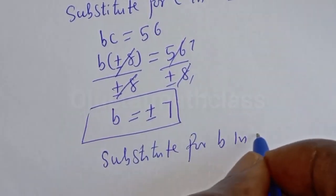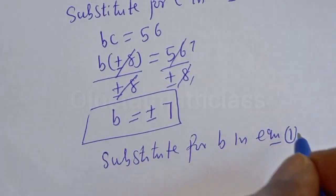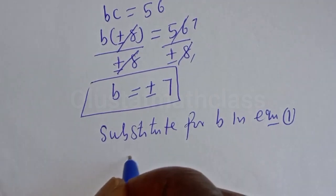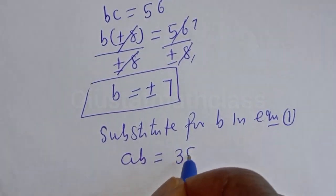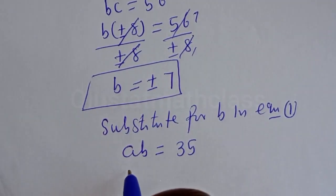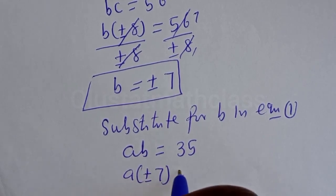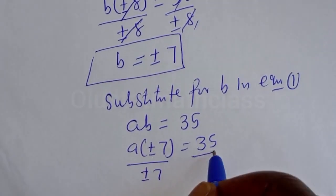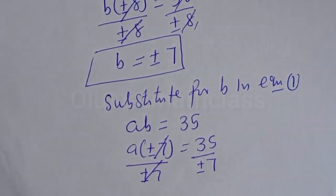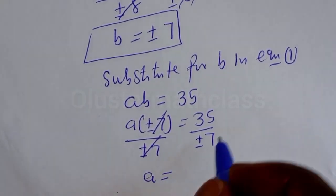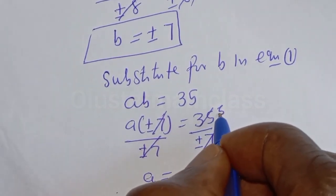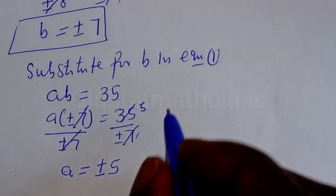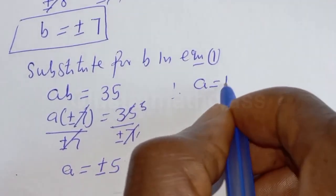Now we can substitute for B in equation 1 to get the value of A. Equation 1 is AB equals 35, with B equal to plus or minus 7. Let's divide both sides by plus or minus 7. The 7 cancels, and 35 divided by 7 gives 5, so A is equal to plus or minus 5.